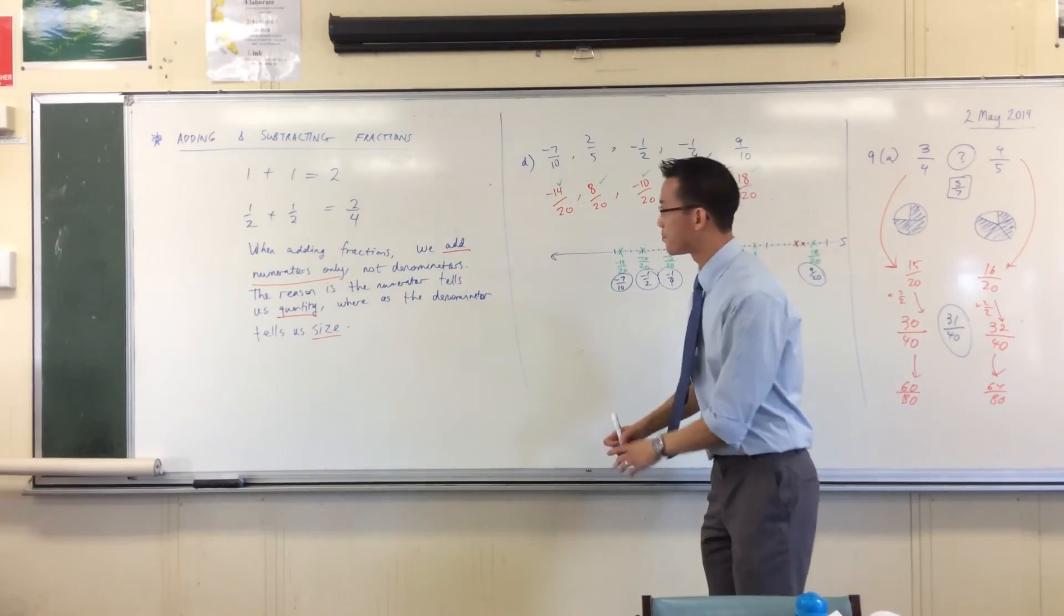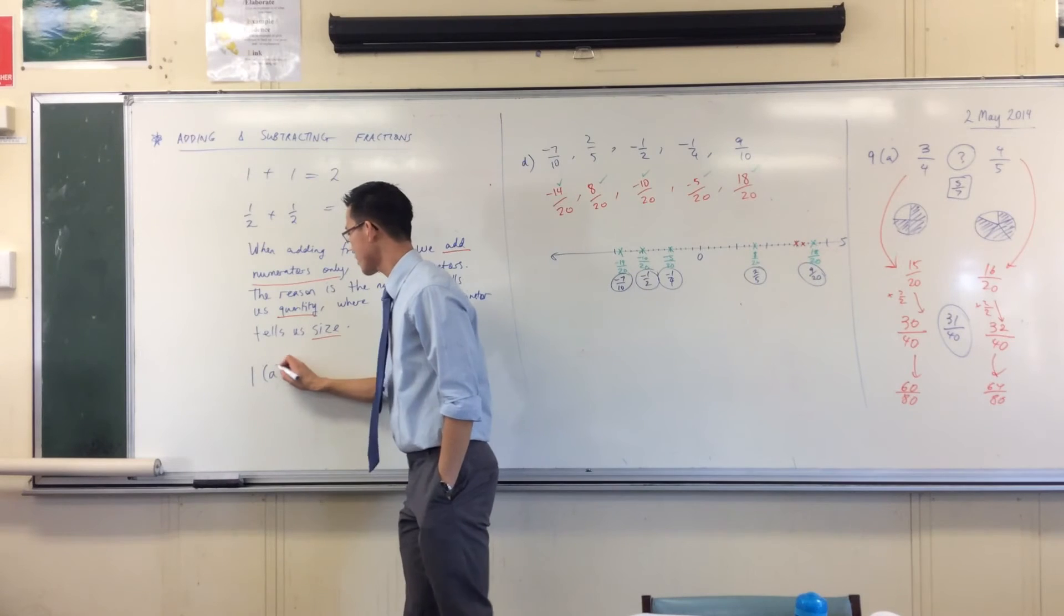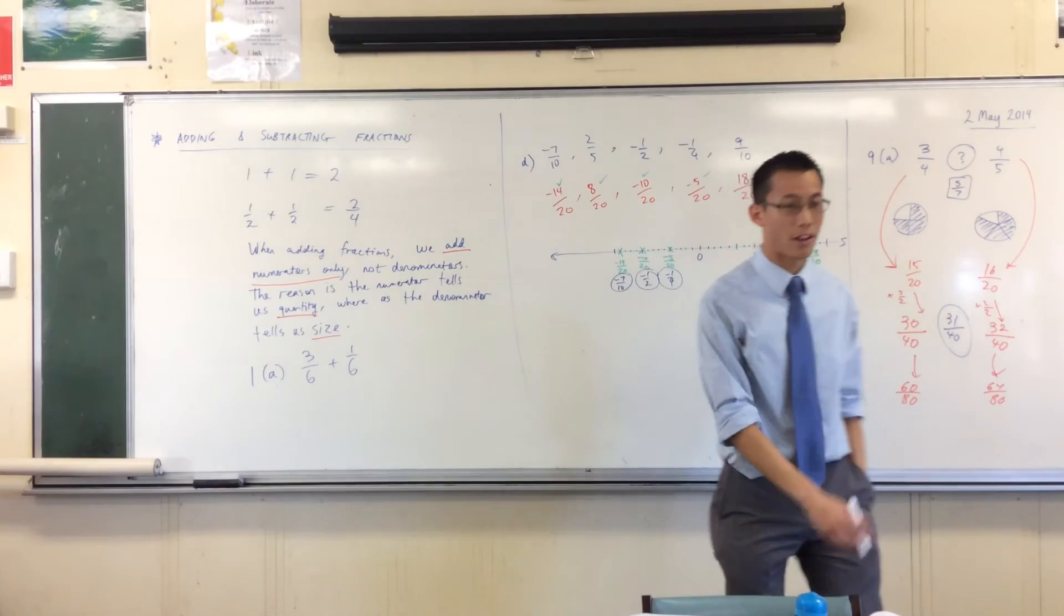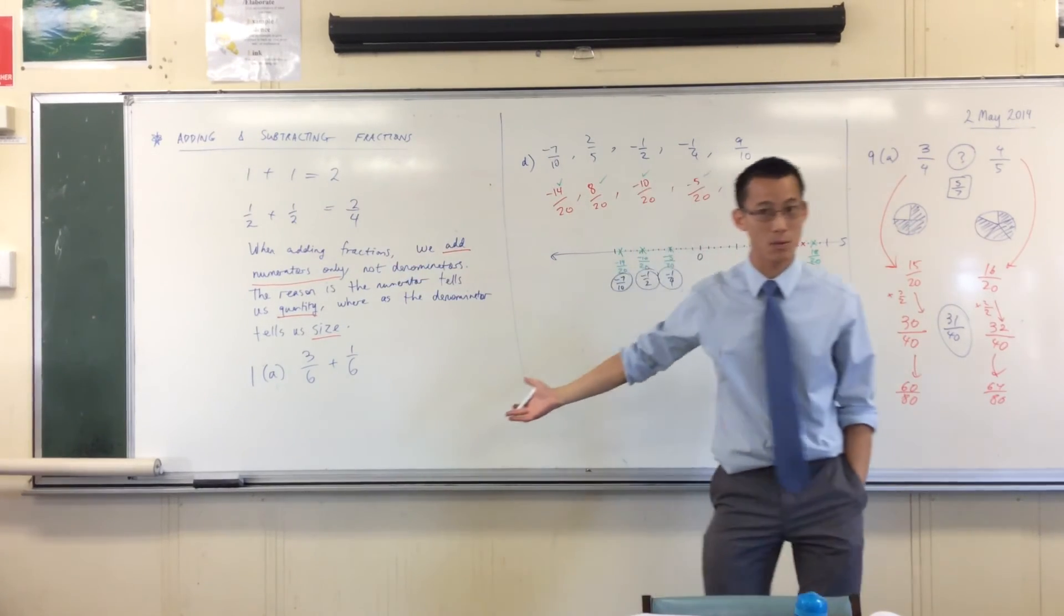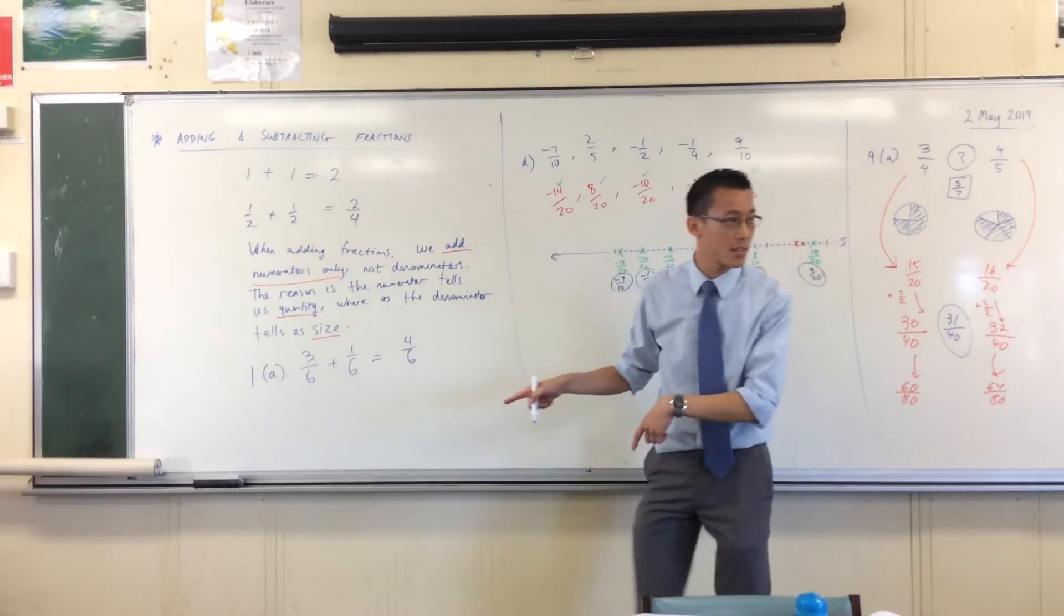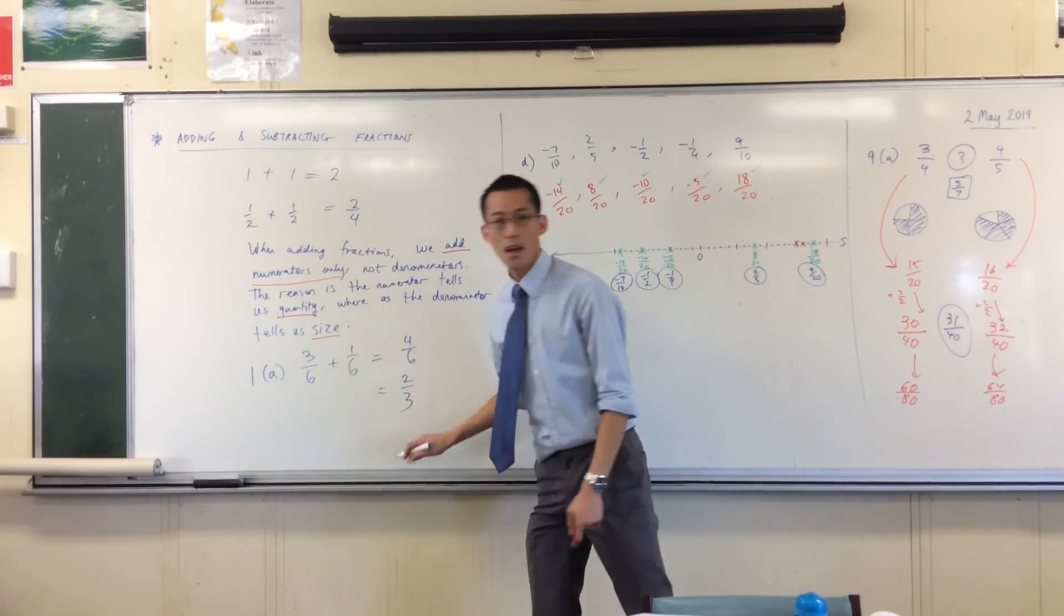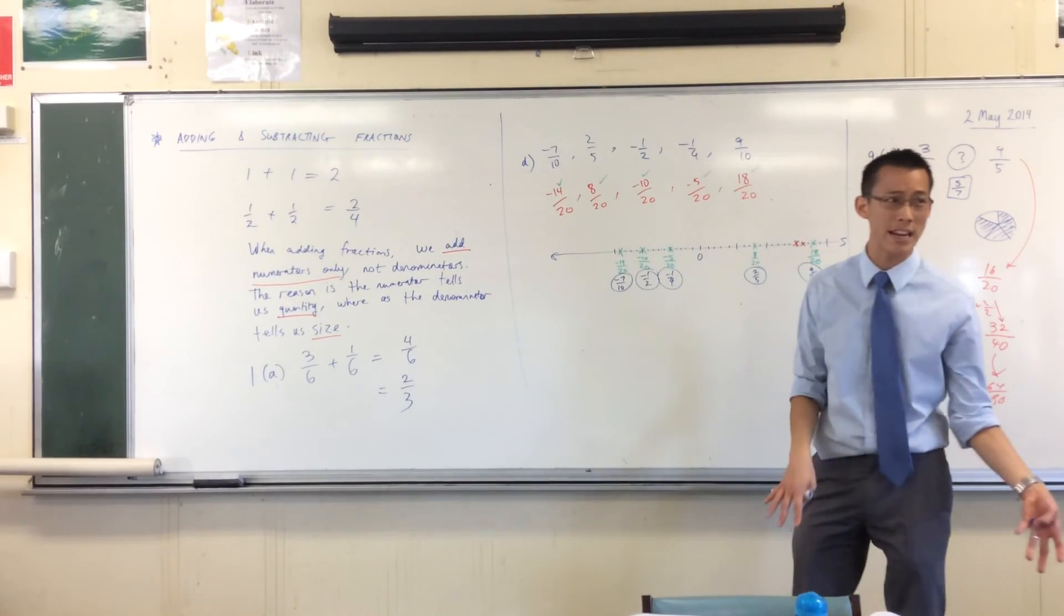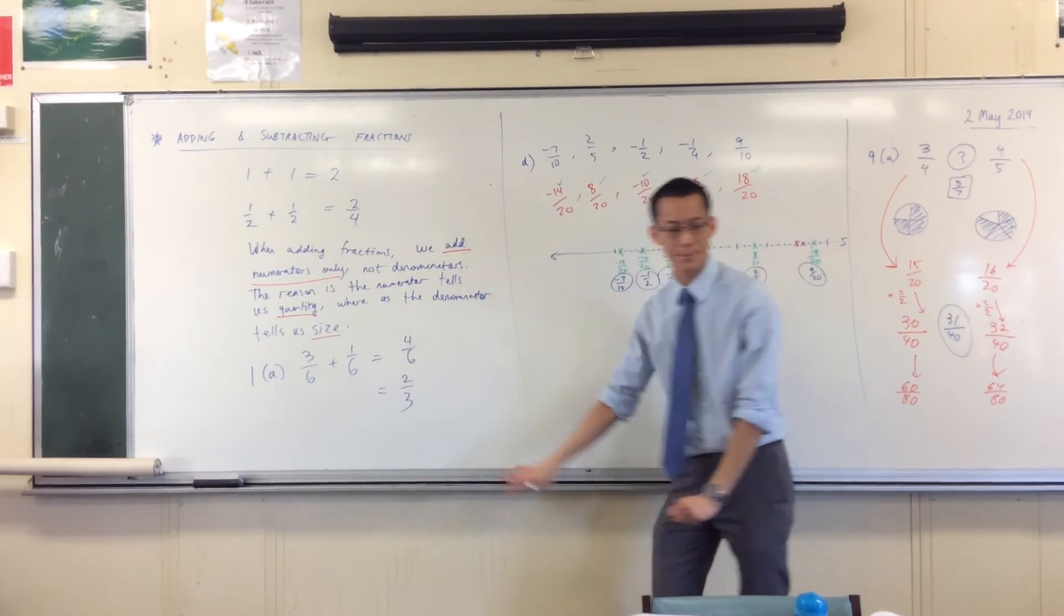So therefore, let's do some. Now, I think on the page you turn to, they start off with ones that already have a common denominator. So there's 1A. As we've just seen, we add numerators only, not denominators. So the answer would be 4/6, and we should write this first, then we should simplify it. That's equal to 2/3. Please set it out like this. Don't have your equal signs running across over this way. It's very hard to read and very hard to follow. If you've done that, cross it out or white it out and write it properly.